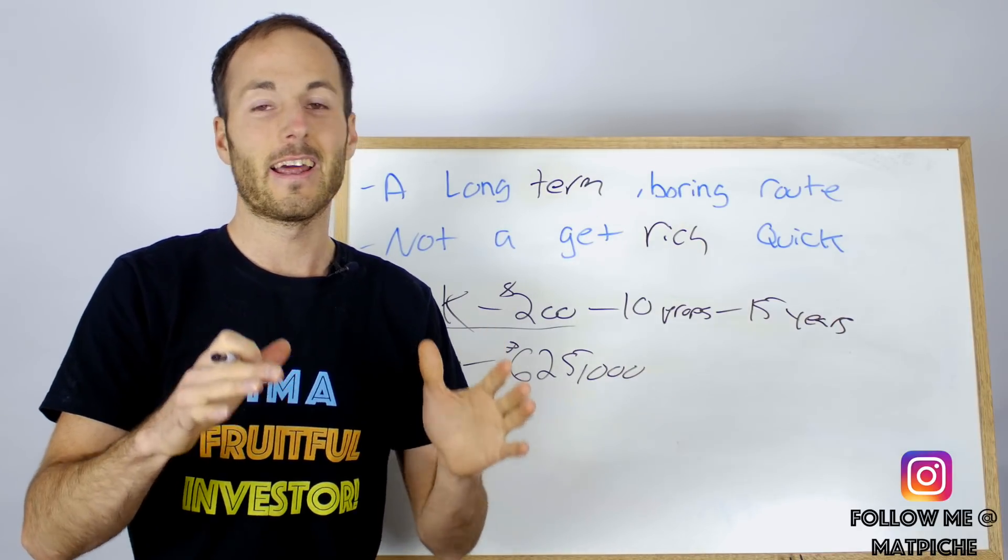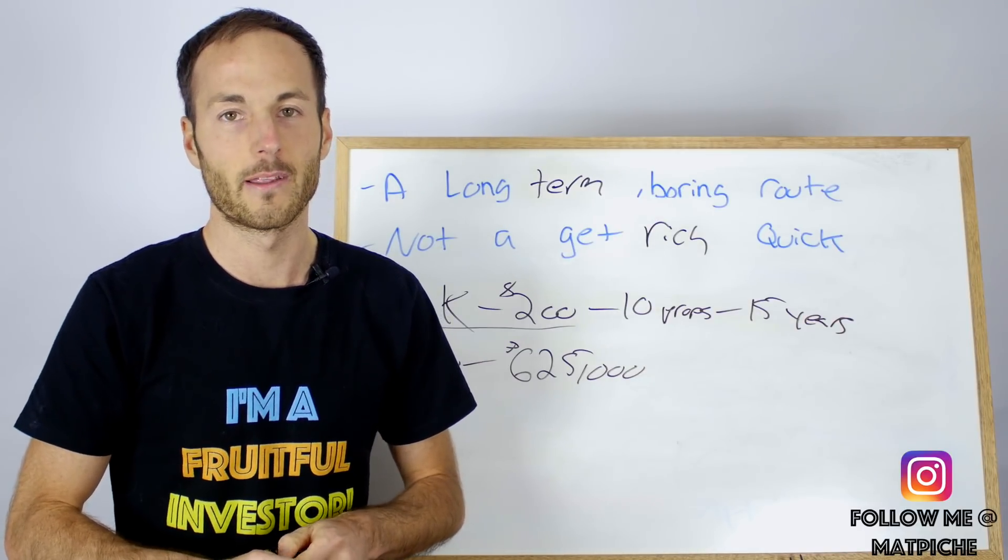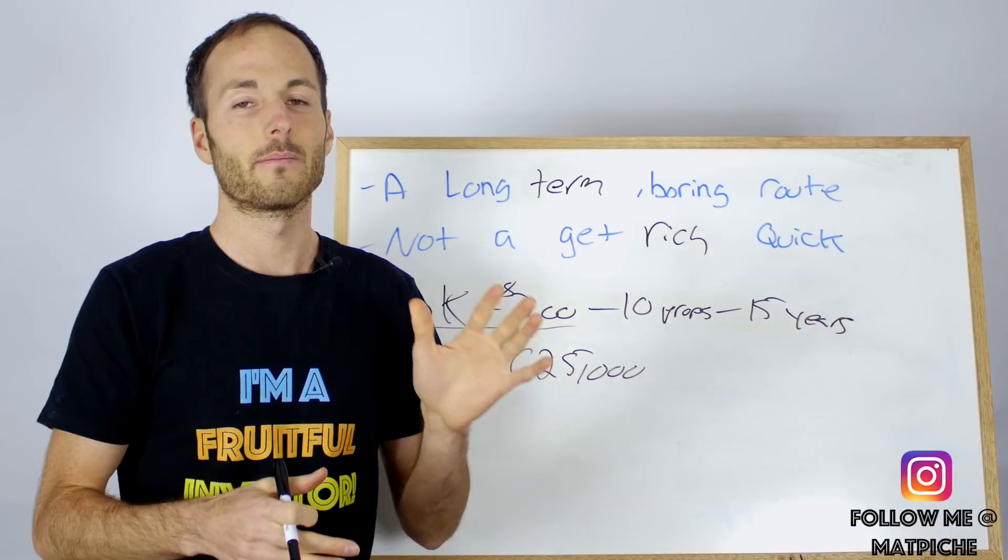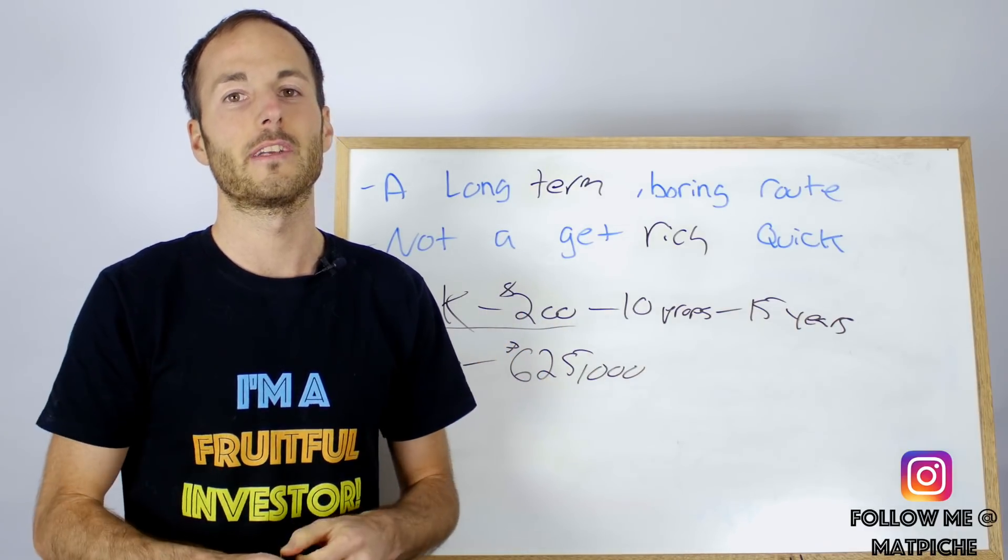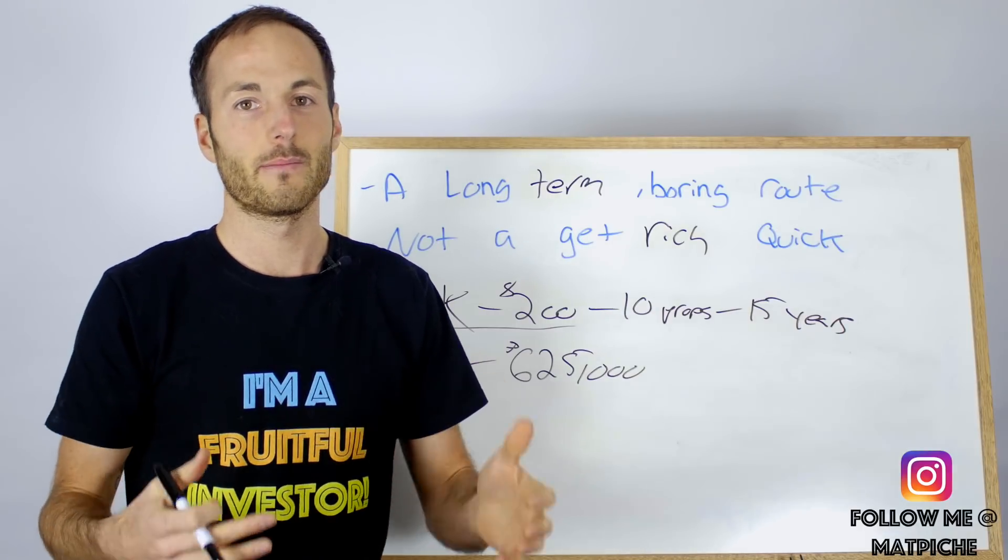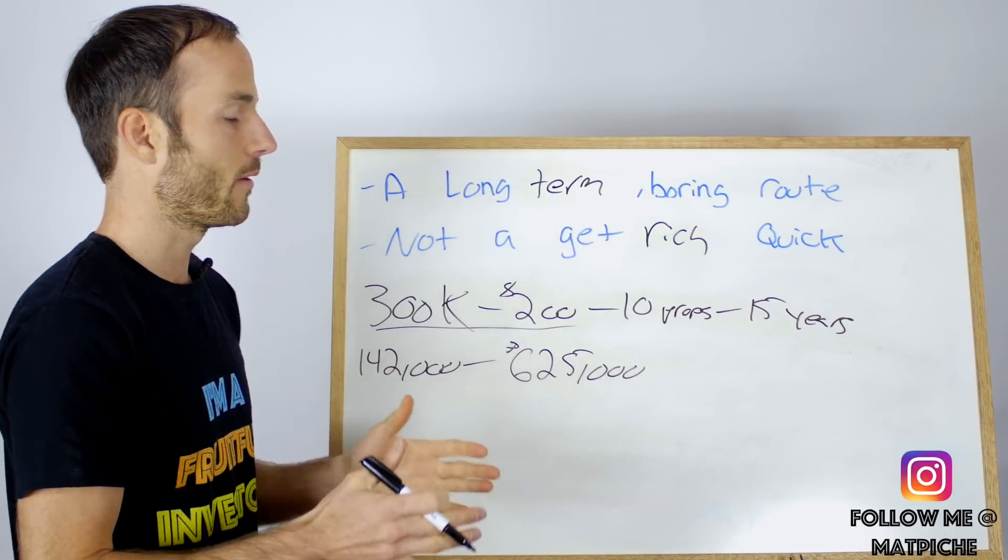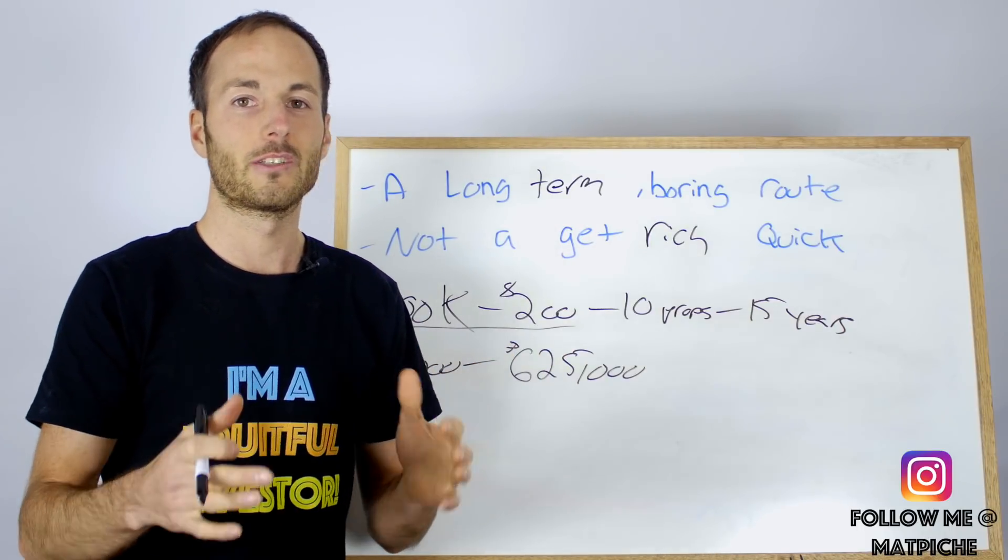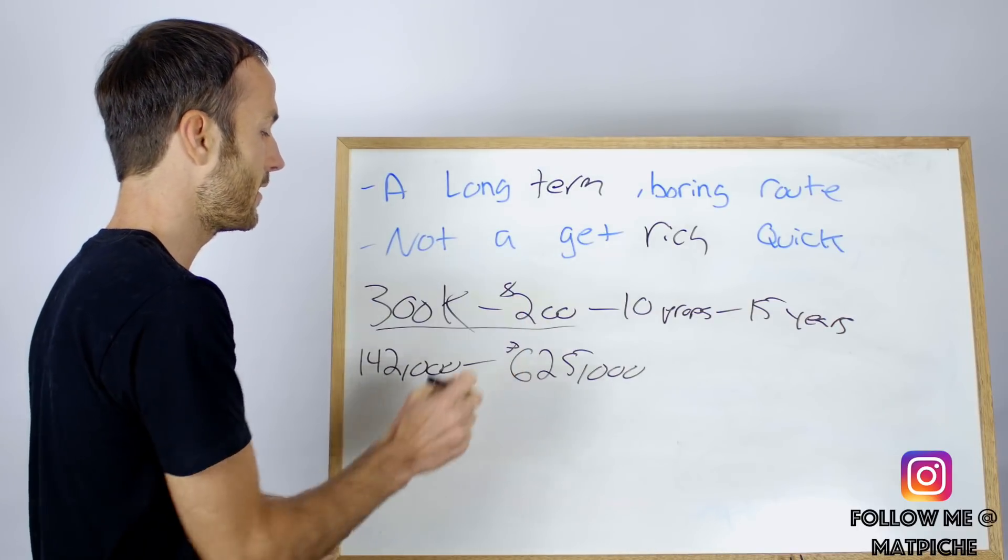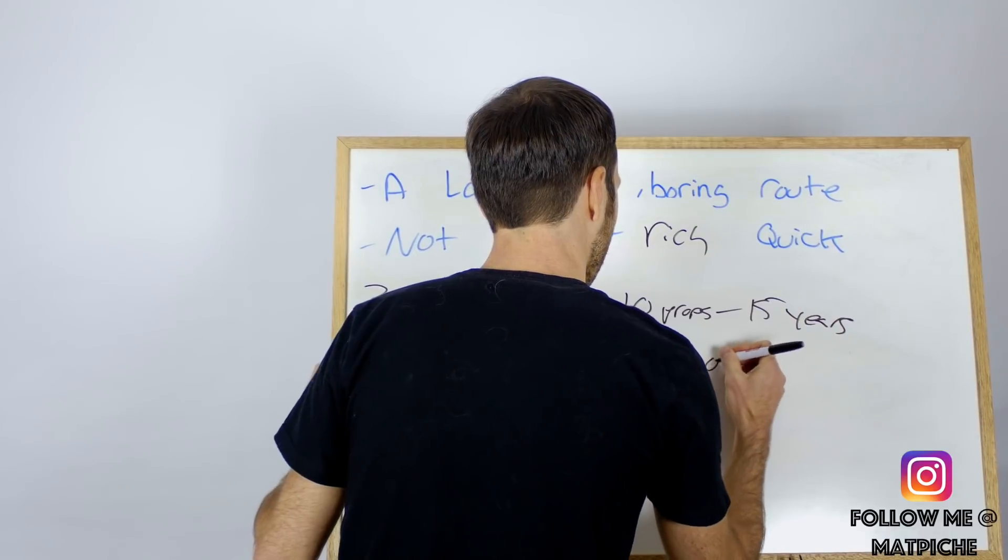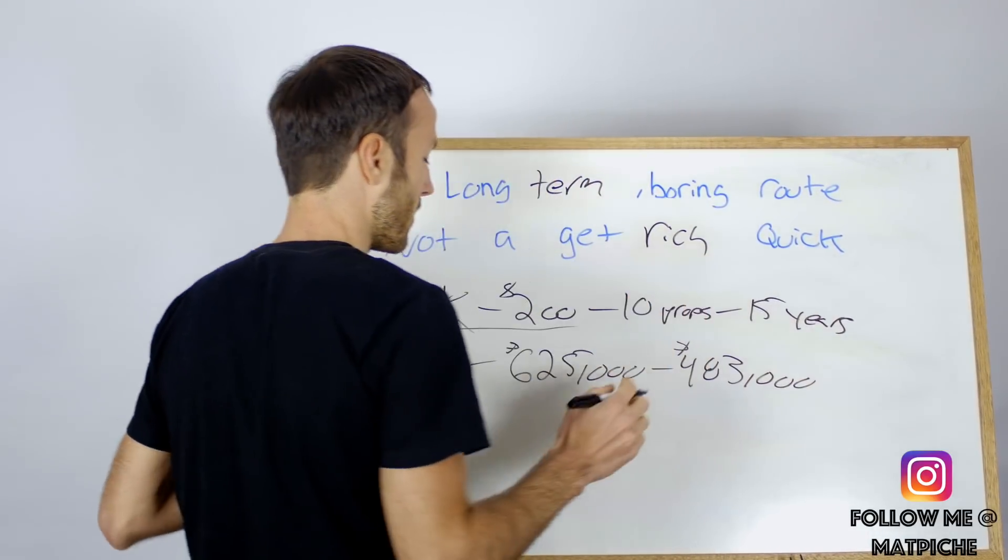We're not going to see that every single year - it's unrealistic, it's definitely going to slow down at some point. However, a 5% appreciation rate per year is very conservative but averages out over 25 years here in Kitchener-Waterloo. So if we were to sell this property in 15 years, we would walk away with a profit of $483,000 per property. We owe the bank $142k, it's worth $625k, we sell it, we walk away with approximately $483,000.